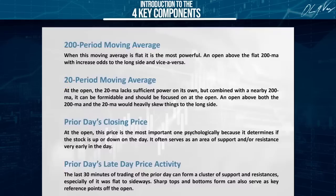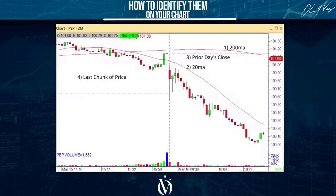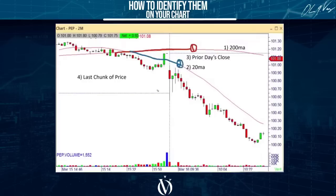Now let me go to charts and show you how to put this together. We're looking at a two-minute chart of Pepsi. Item number one is the 200 period moving average right there. Item number two is the 20 period moving average. We've got two of our items. Item number three is yesterday's closing price — this is yesterday and this is today — represented by that dashed line.